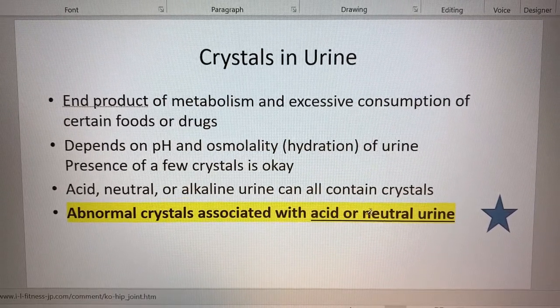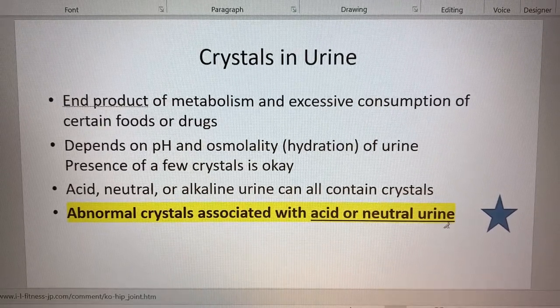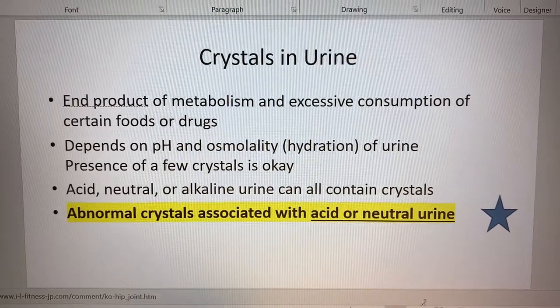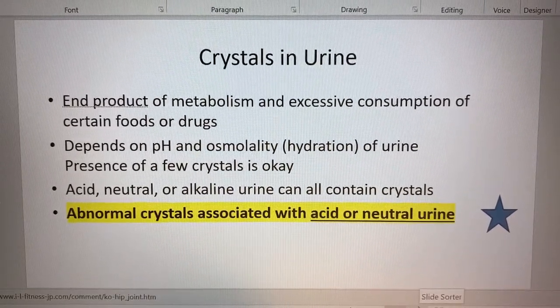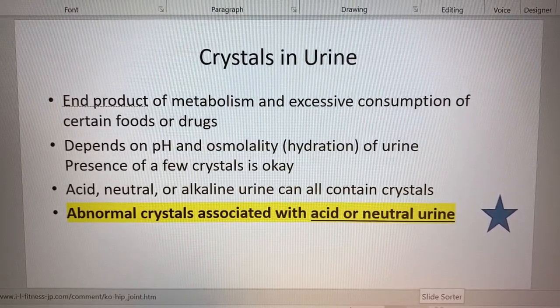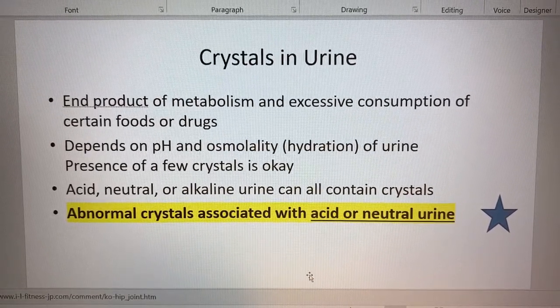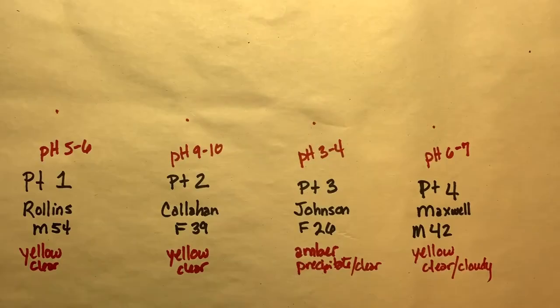If the urine is neutral, remember that the range of urine is 4.5 to 8. pH doesn't always tell you that the person has crystals. So let's look at our sheet that we've come up with and see what our diagnoses are.